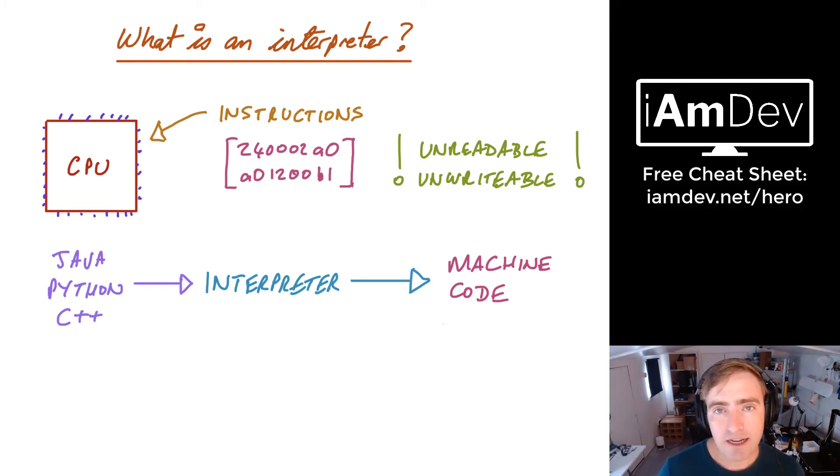That interpreter creates machine code on the fly from, for example, your Java code. So the difference between a compiler and an interpreter is a compiler converts the code at build time.